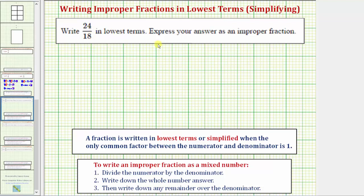We're asked to write 24 eighteenths in lowest terms and express the answer as an improper fraction. So we'll express the answer as an improper fraction, but we'll also review how to write an improper fraction as a mixed number.